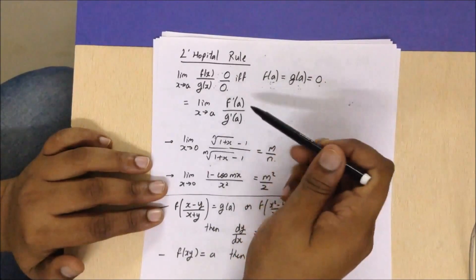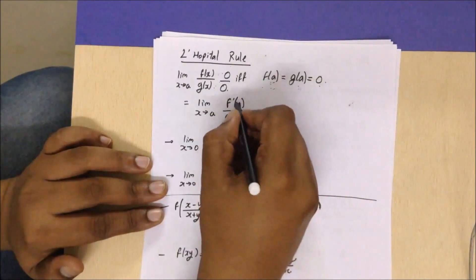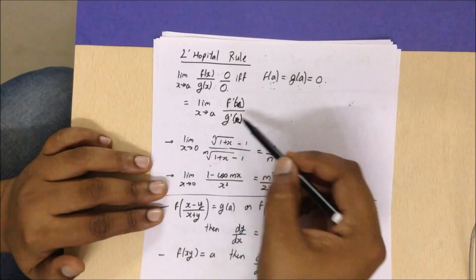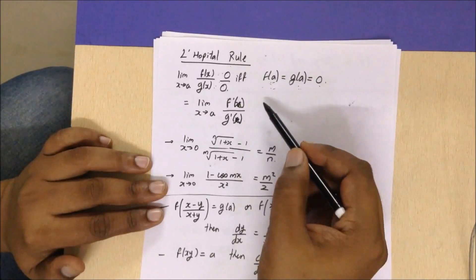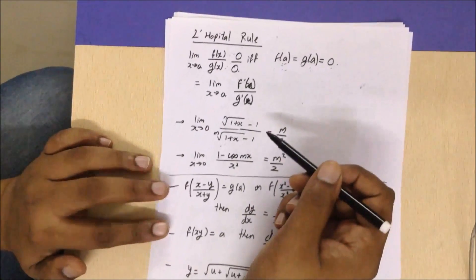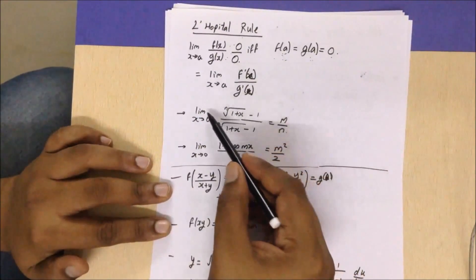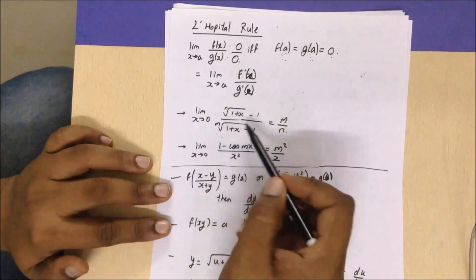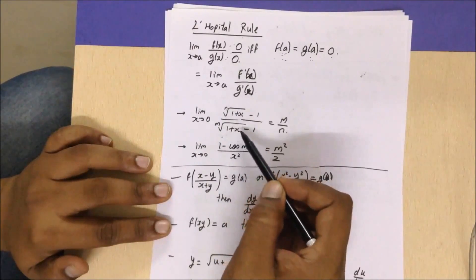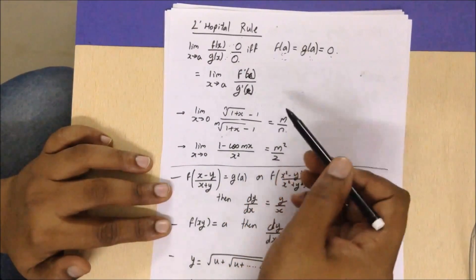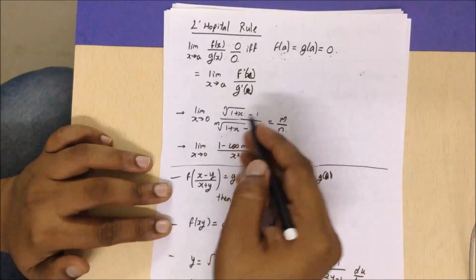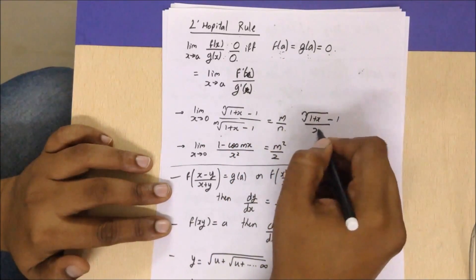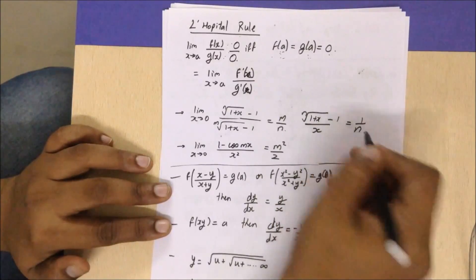If it is zero by zero form, then the limit can be changed to f'(x) upon g'(x). If it's again zero by zero, you can take the second derivative of both functions. Remember: the limit as x tends to zero of the m-th root of (1+x) minus 1 upon the n-th root of (1+x) minus 1 is m by n. Also, the limit as x tends to zero of the n-th root of (1+x) minus 1 by x is 1/n.